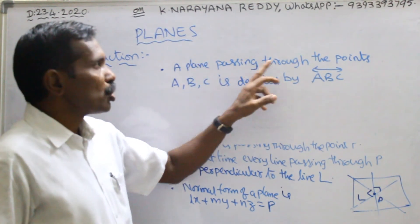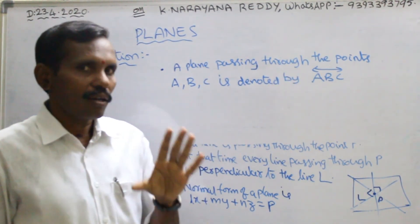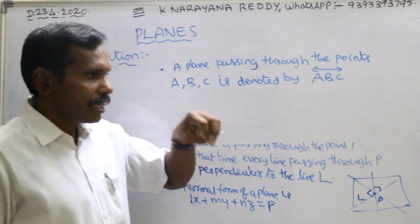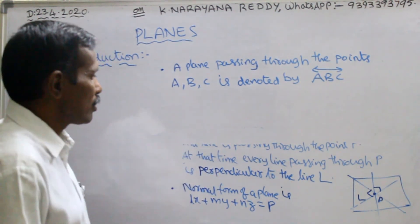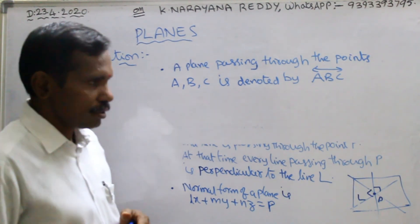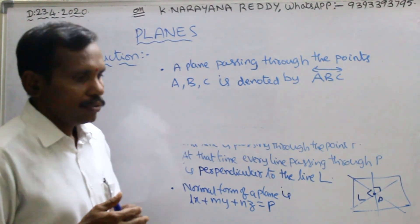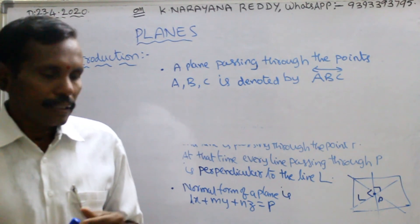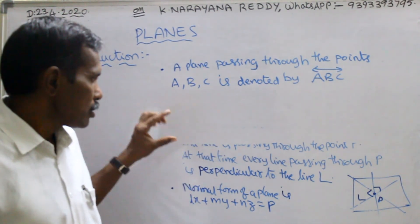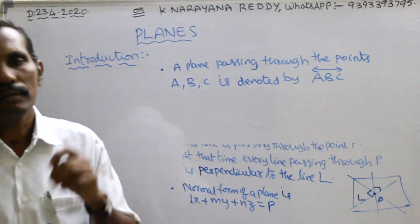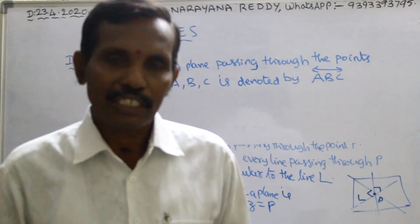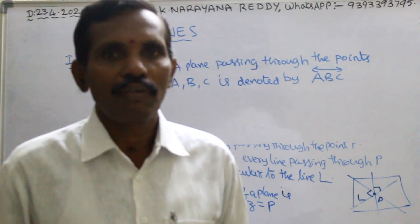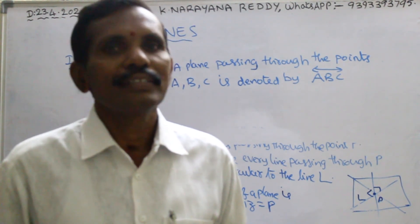A plane passing through three non-collinear points where at least two are connecting a line, and that line lies in the plane itself. This is some introduction about planes. We will do some problems regarding planes in future classes. Please practice this introduction about planes. Thanks for watching — if you like this video, please subscribe to our YouTube channel, like and share it.